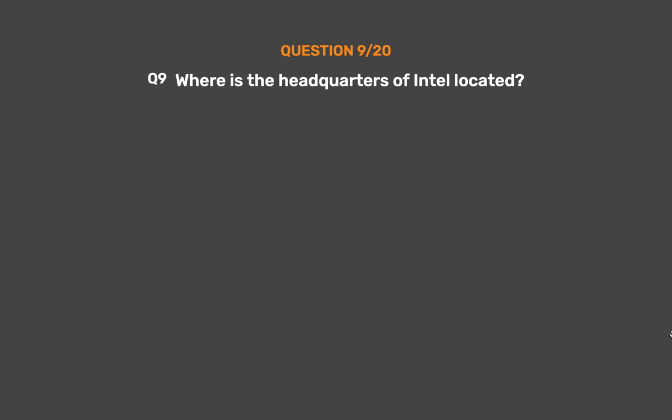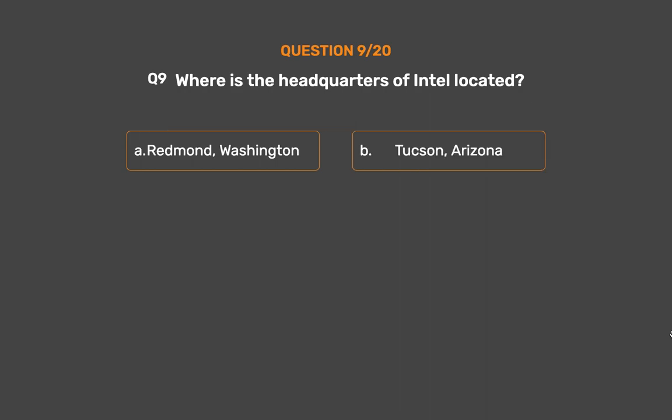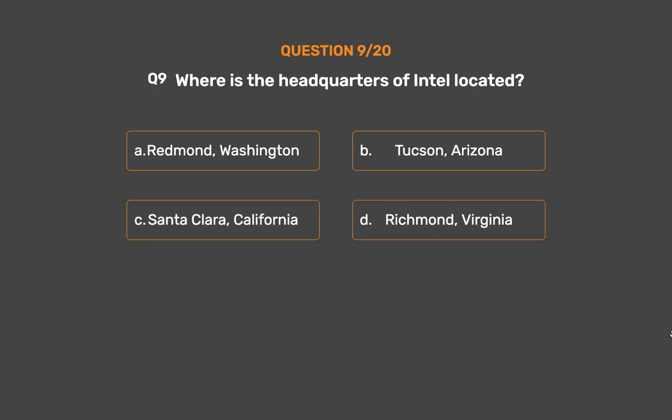Question number 9. Where is the headquarters of Intel located? Option A: Redmond, Washington. Option B: Tucson, Arizona. Option C: Santa Clara, California. Option D: Richmond, Virginia.